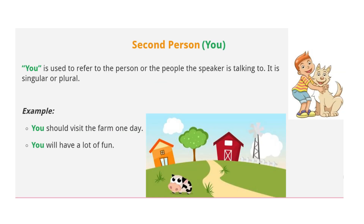Second person: you. 'You' is used to refer to the person or the people the speaker is talking to. It is singular or plural. Example: 'You should visit the farm one day. You will have a lot of fun.'